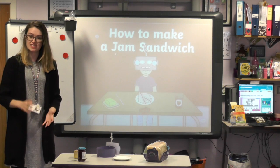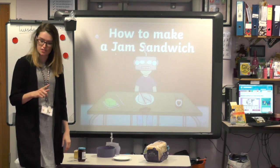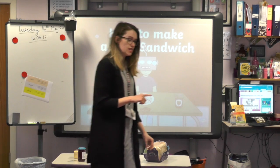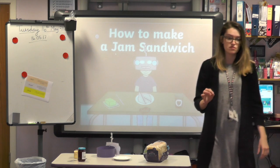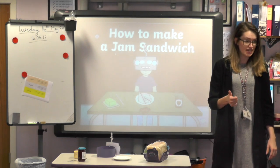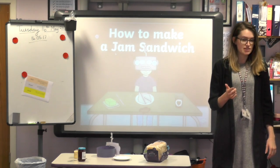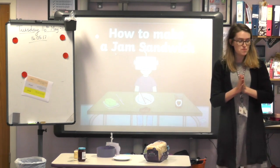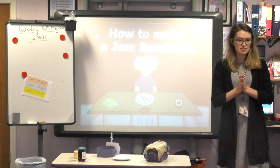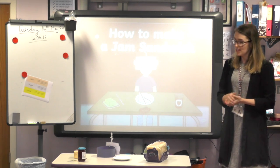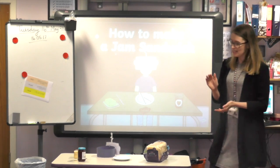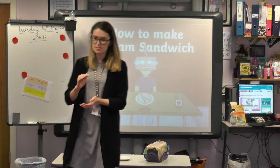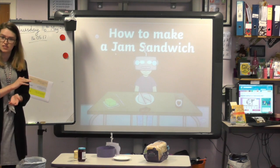An algorithm is a set of instructions for a computer program to follow. Your instructions need to be really, really clear and really, really simple. Robots don't have brains like us — they can't think for themselves. So they need to have a list of program instructions to help them do a task.